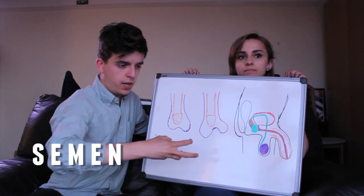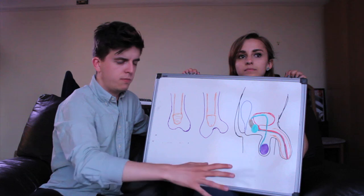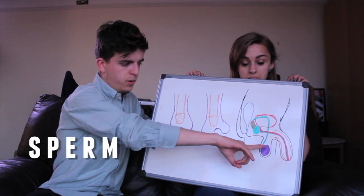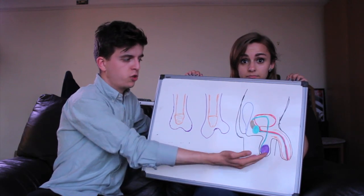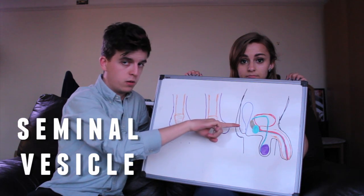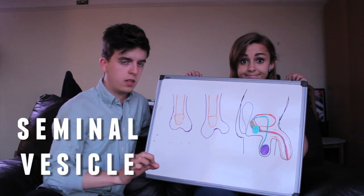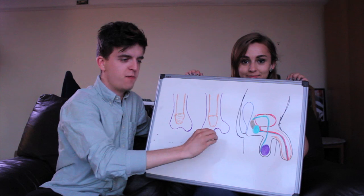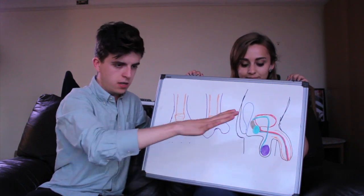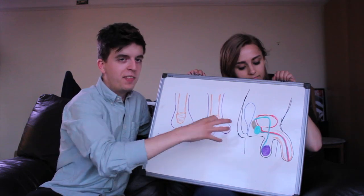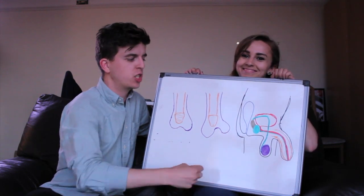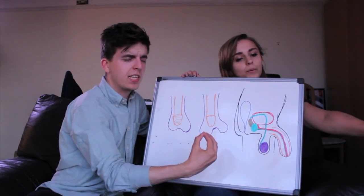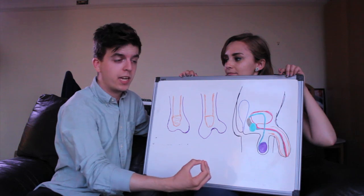Semen — the actual end result of ejaculation — is made of a few different things. It starts with sperm being produced down here, which travels up to the seminal vesicle where new fluids are added to the mix, and then to the prostate where even further fluids are added. From there, the perfected mixture enters the shaft and then exits through exactly the same pipe that we use to pee.